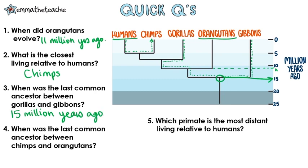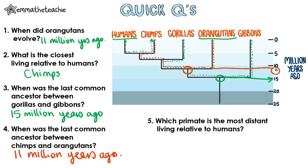If you got that question wrong, pause and try the next question on your own before pressing play. Four: when was the last common ancestor between chimps and orangutans? We're going to do the exact same thing — read down and across until the branches meet together. We can see this time it was 11 million years ago.